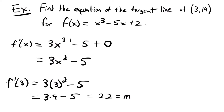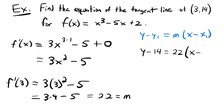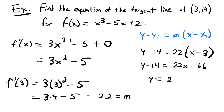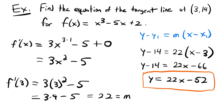Now we have our point (3, 14) and our slope 22, so we're ready to put together an equation for our tangent line using point-slope form: y minus y1 equals the slope times x minus x1. So we have y minus 14 equals 22 times (x minus 3). Distributing: y minus 14 equals 22x minus 66. Adding 14 to each side: y equals 22x minus 52. This is the equation of the tangent line at the point (3, 14) on this function.